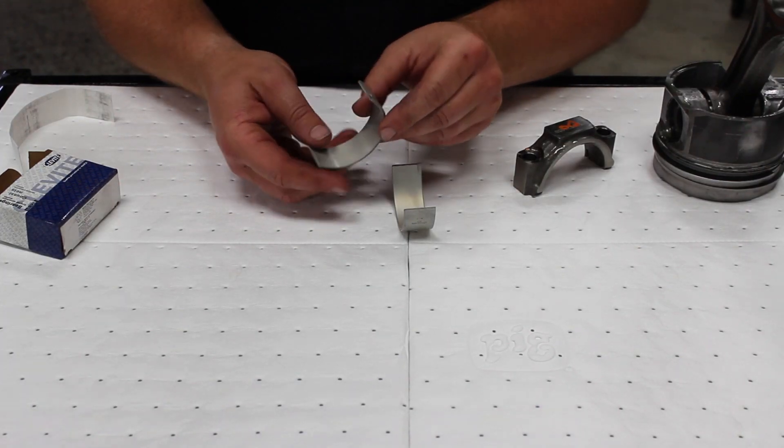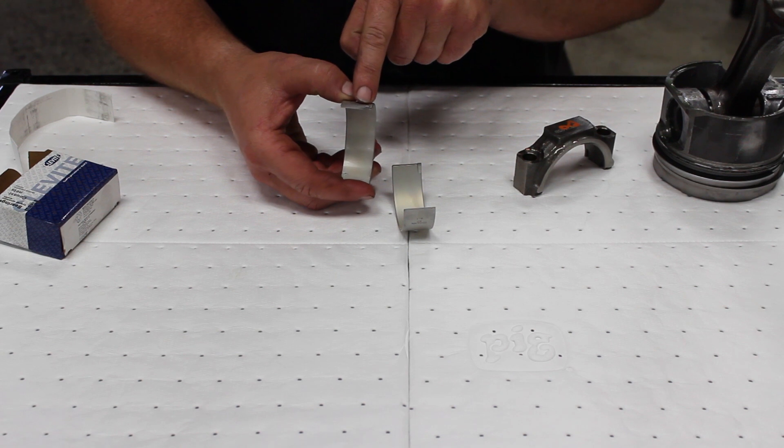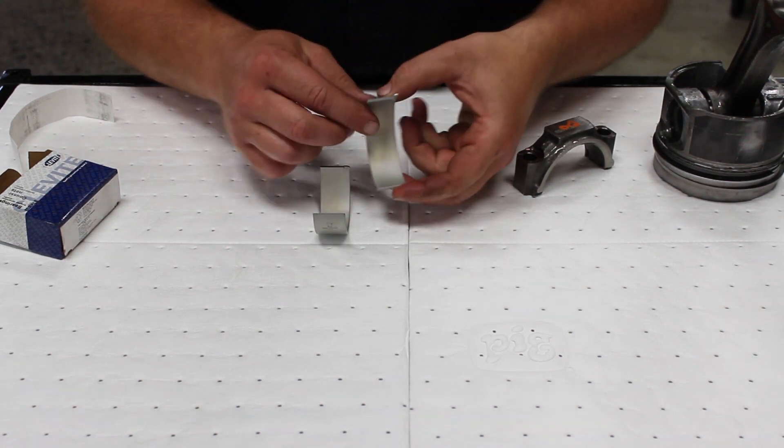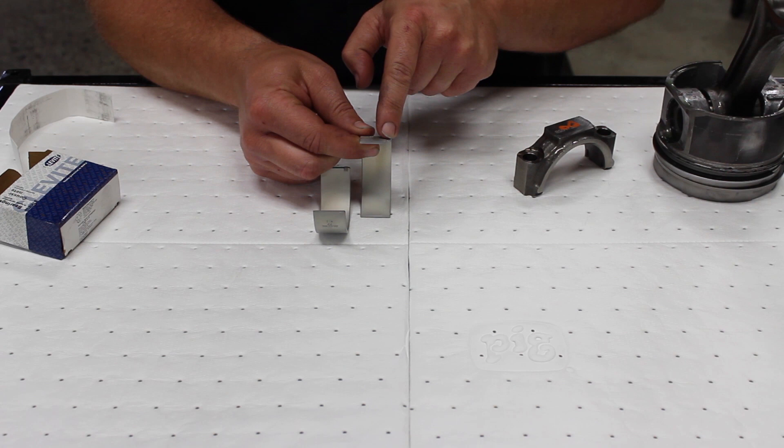If you look at the rod bearings, the tang is inset on one side just from the edge. The other bearing, the tang is right out to the edge.